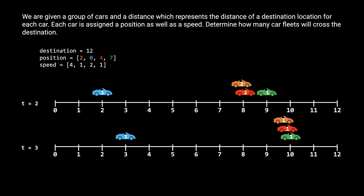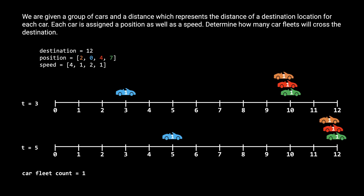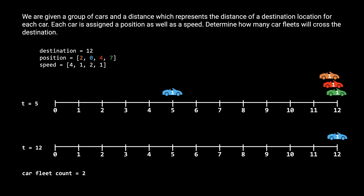The ultimate goal of this problem is to find out how many car fleets will ultimately arrive at the destination. For this particular example, the correct answer is two. At T equals five, the orange, red, and green car arrive at the destination — that counts as one car fleet. And at T equals 12, the blue car arrives — that is the second car fleet. It's important to note that once a car or group of cars arrives at the destination their journey is complete and they are removed from the road, so if two fleets would merge after the destination we don't consider that merge. Because a total of two car fleets passed the destination, we would return two as our final answer.